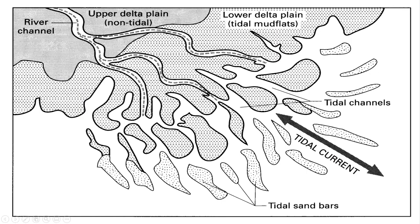Tidally-influenced deltas experience manipulation to both suspended load and bed load. In tidally-influenced deltas, occasionally the flow will be reversed in the delta top, which can produce cross-laminations. This kind of delta has an elongate form of mouth bar that has cross-laminations and mud drapes. It is worth mentioning that all three of these major types of deltas exist on a continuum, and these features can be blended and obscured by the mixing influences of these various forces.